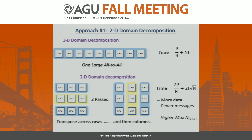2D domain decompositions are also useful because they allow you to use more cores. For instance, with 1D decomposition and one radial level per process, you may be limited by the number of radial points. But in 2D decomposition, you're limited by the number of radial points times the number of points in theta.